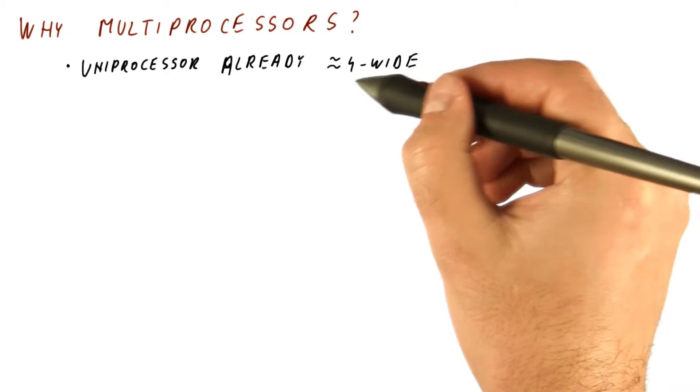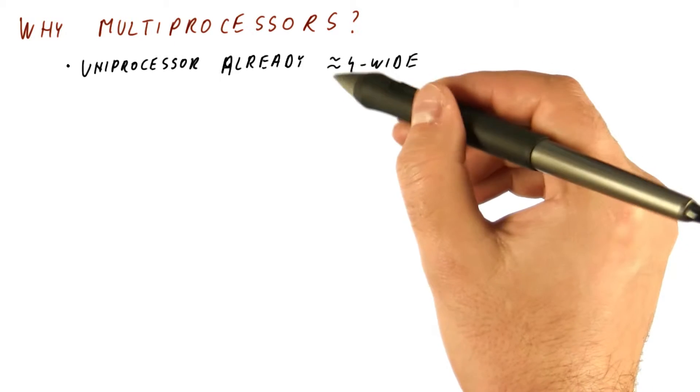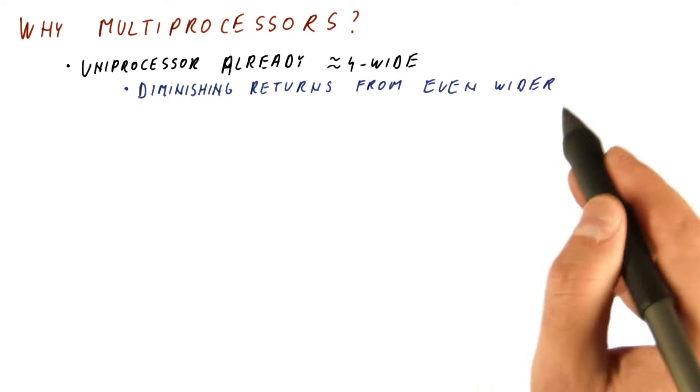When we got to about four to six wide is when we switched to using multiprocessors. And that's because once you get to this point, you get diminishing returns from making the uniprocessor even wider.